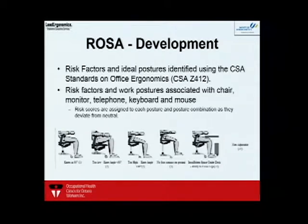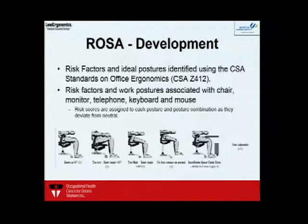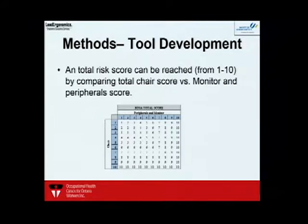ROSA was developed at the University of Windsor, primarily based on CSA standards for office ergonomics. It bins risk factors into categories related to the chair, monitor, telephone, mouse, and keyboard. Within each group there are fixed risk factors — for example, whether your chair is too high or too low — and additional risk factors that can be added on.